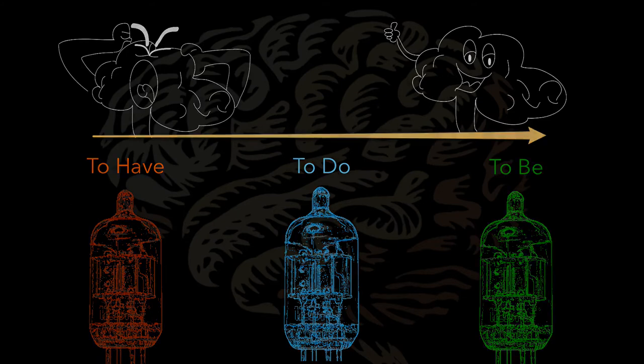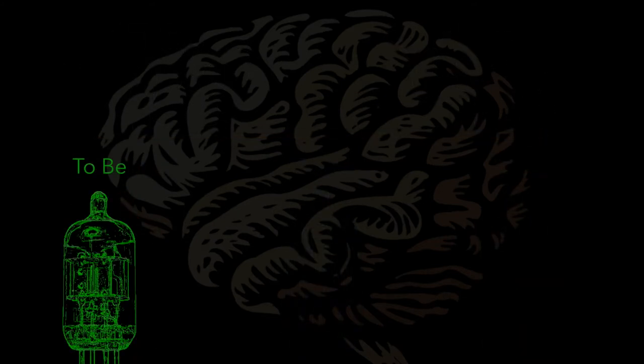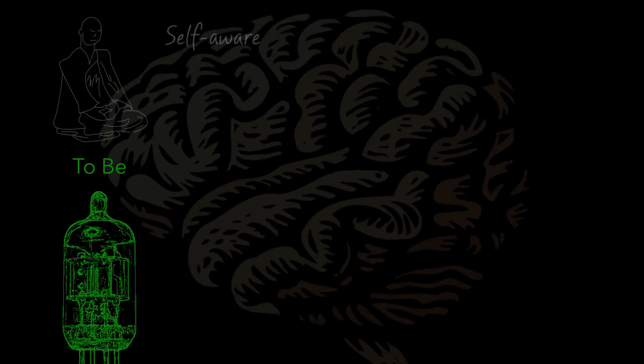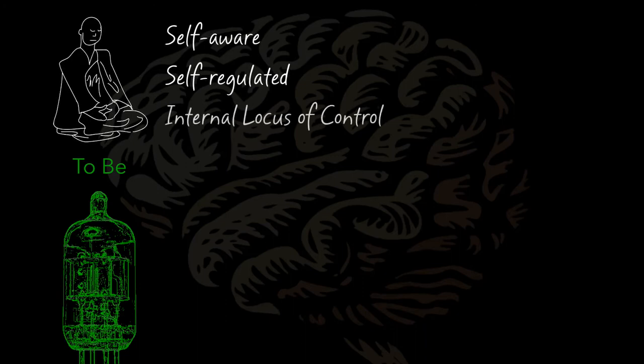Should we not shape our life such that the to-be valve lights up first and we become more self-aware, more self-regulated, and develop an internal locus of control? Would this not allow us to make more conscious and better choices?